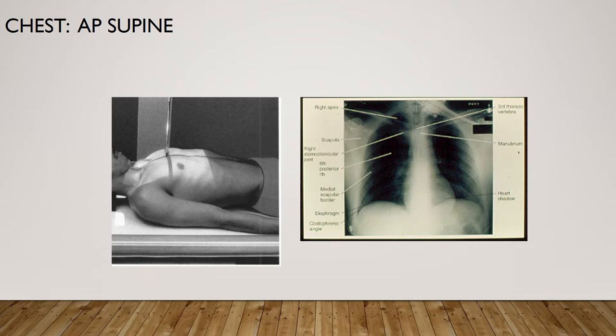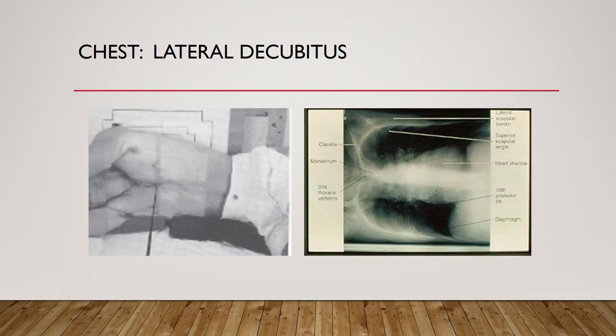For an AP chest supine — meaning the patient is lying on the table — this is going to be taken at 40 inches. If the patient is on the table, you are going to use the grid. Make sure you have a central ray of about 15 to 20 degrees cephalic, still entering at the apex of the patient's scapula. Shoot at the end of the second full inspiration. Because you are at 40 inches, shoot at about 70 to 80 kVp. Use 200 mA large, and change only your time in milliseconds.